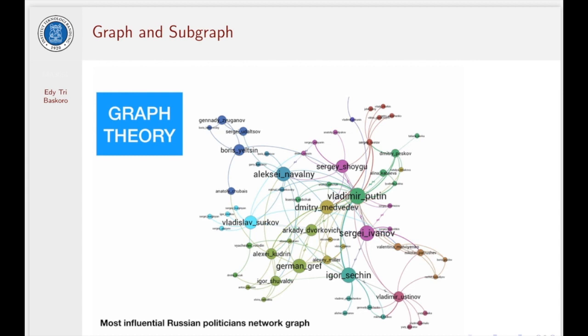By using graph representation, we could also show the nodes in some networks which are very influential. For example, in this situation, we show nodes of persons who are most influential in Russian politics.